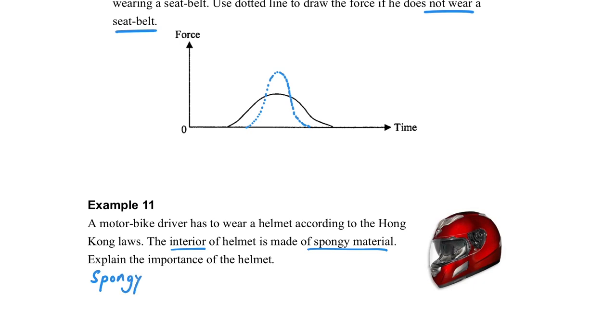How about the interior of the helmet? Usually it is made of spongy material. How to explain its importance? Using spongy material can increase the time of impact, so that it can reduce the impact force acting on the person.